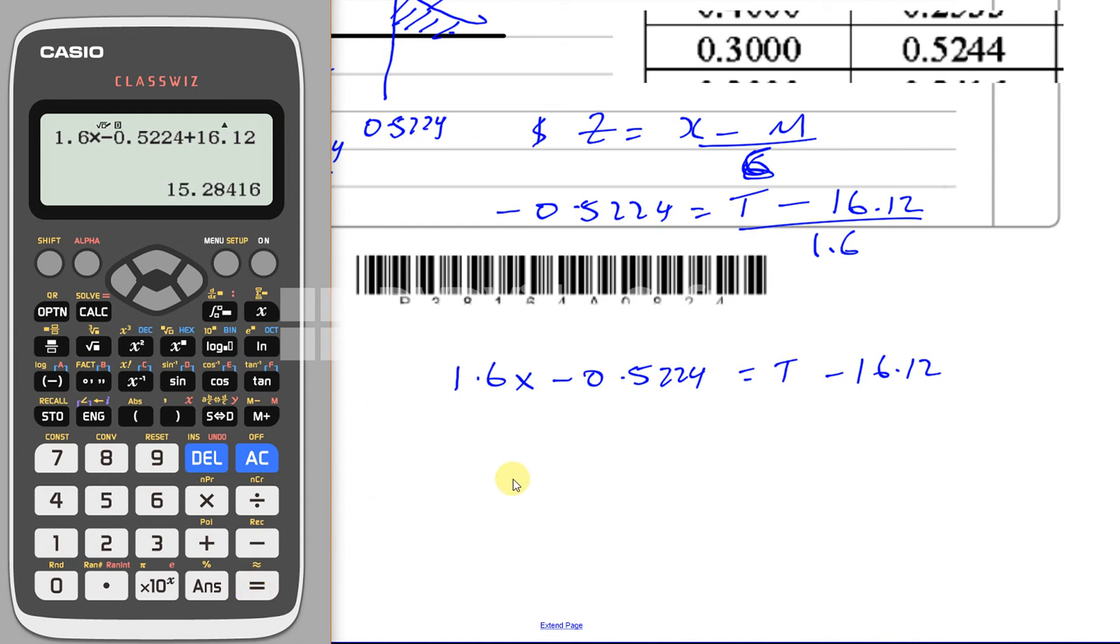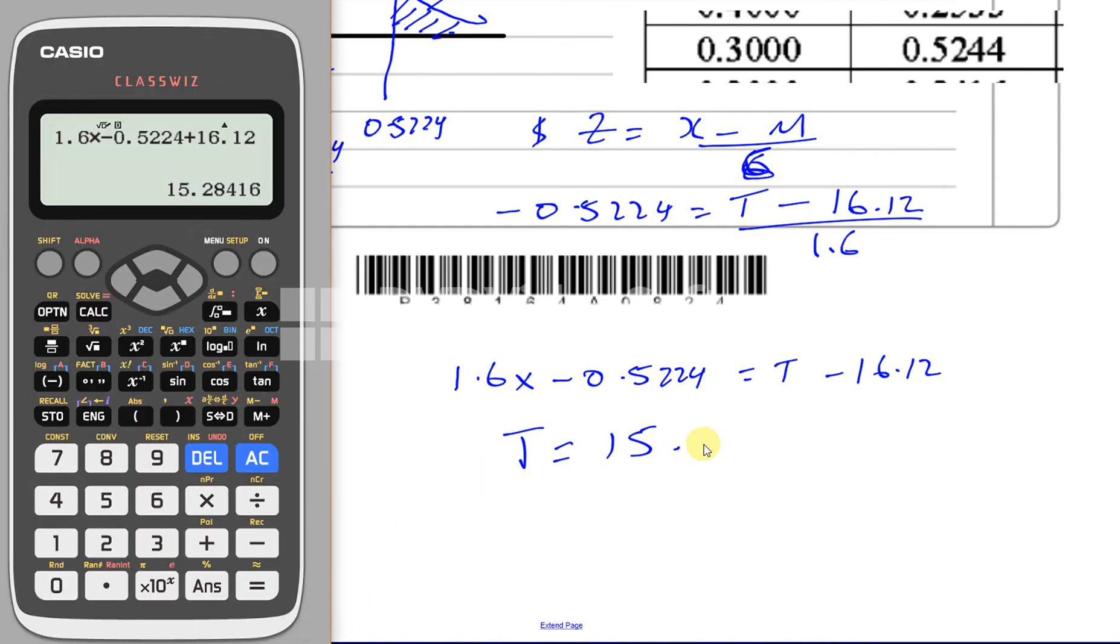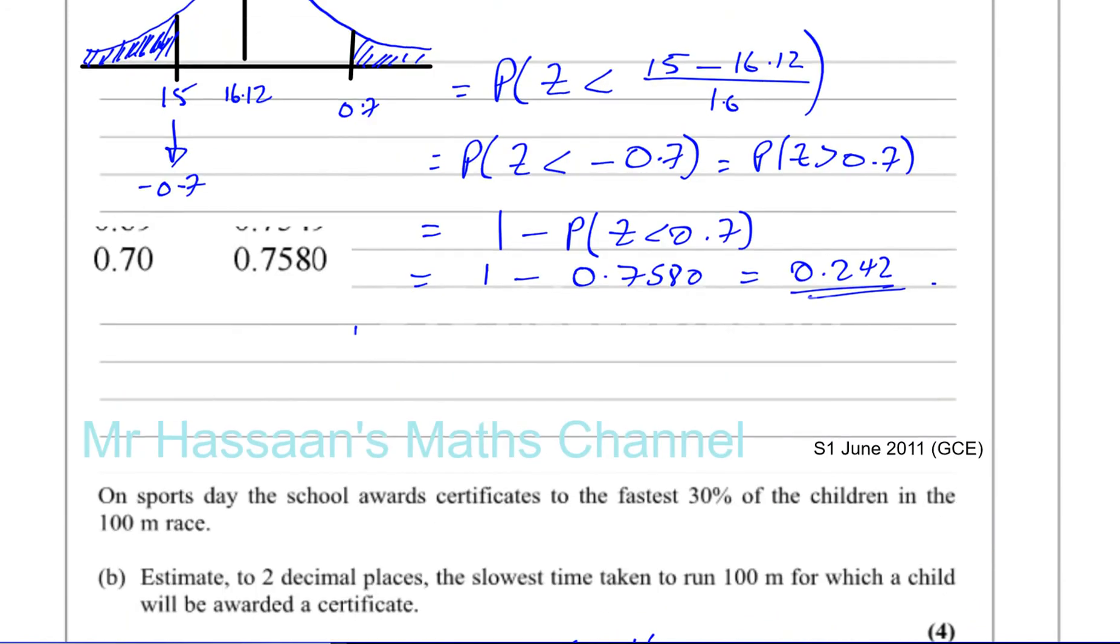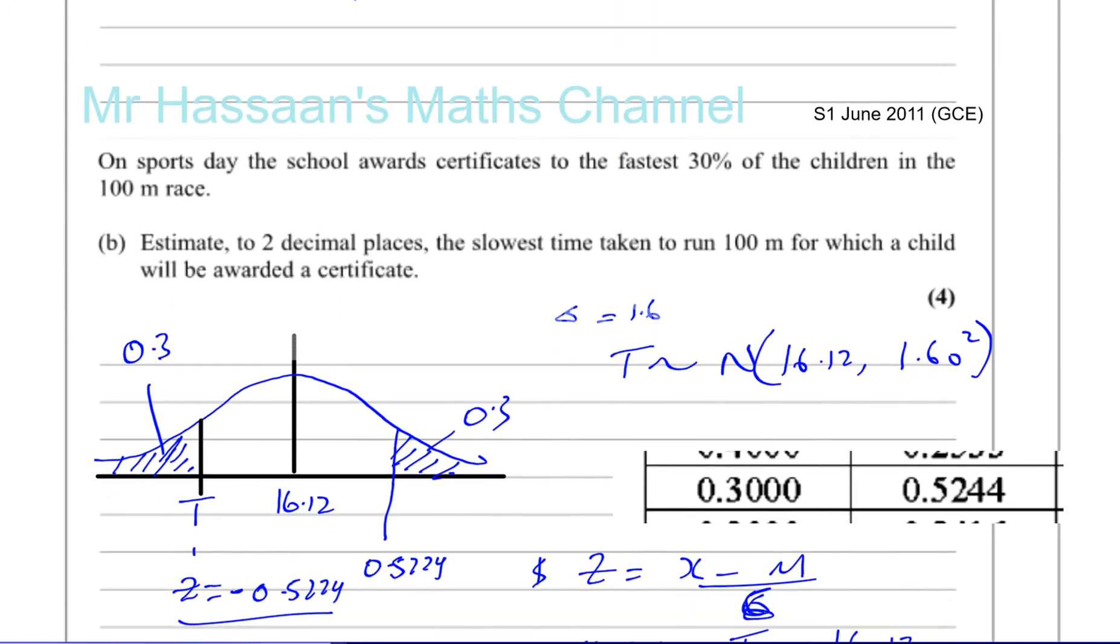And that gives us 15 point, so the time is 15.28416, and they want it to 2 decimal places, so it's 15.28 seconds. So there we have the answer to 2 decimal places.